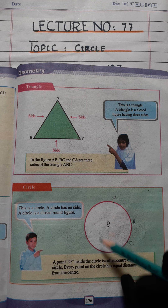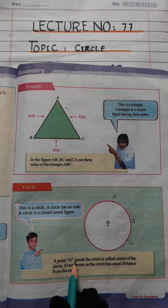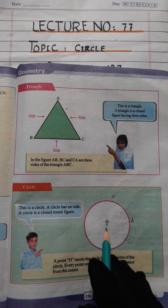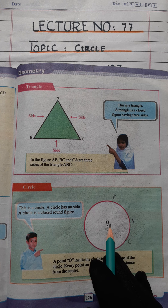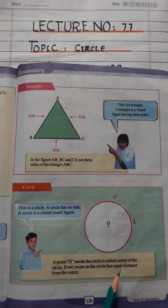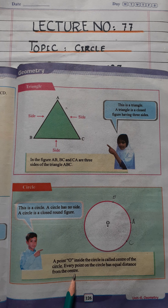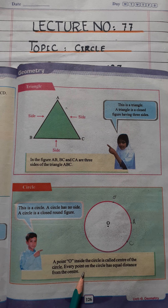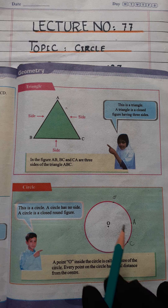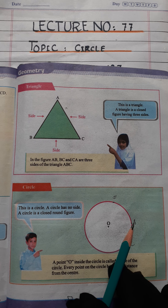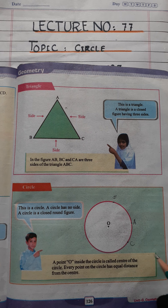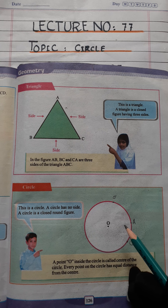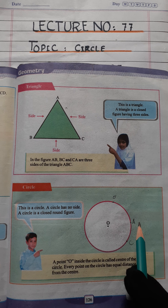A point O inside the circle is called the center of the circle. Every point on the circle has equal distance from the center. What is a circle? A circle is a round, closed figure. A circle has no side. O is called the center of the circle, and every point on the circle has equal distance from the center.